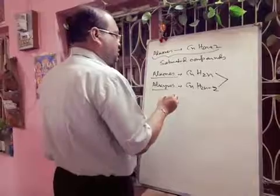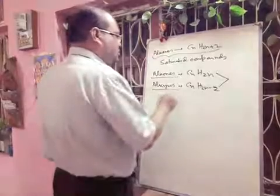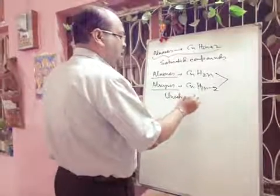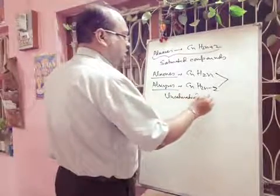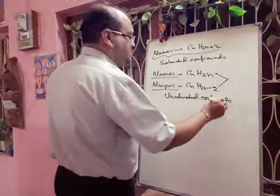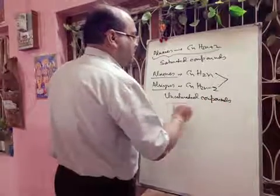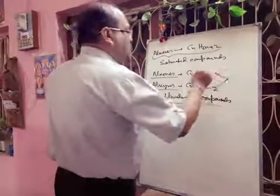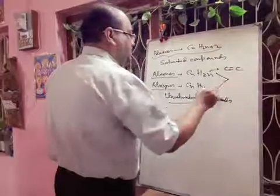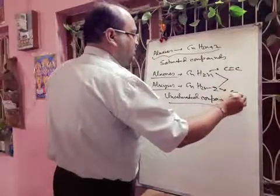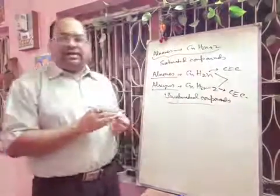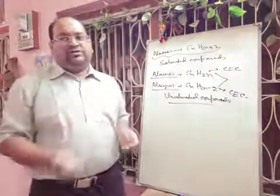Alkenes and alkynes are unsaturated compounds. Alkenes have a carbon-carbon double bond, and alkynes have a carbon-carbon triple bond. That is why they are unsaturated compounds.